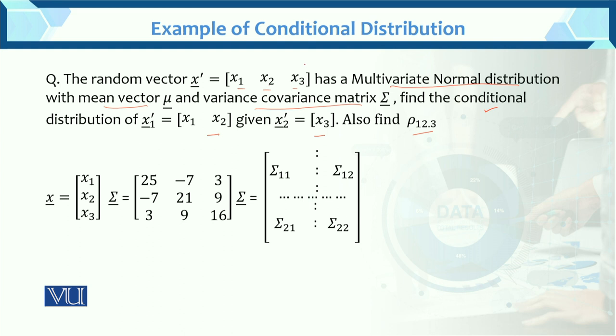Further, ab humaar paas kya hai three dimension hai? Ek vector humaar paas, us three dimension vector ko humane partition kiya hai, x1, x2 given x3. Now, look at this, this is the vector x, x1, x2, x3.